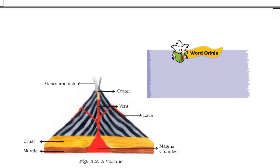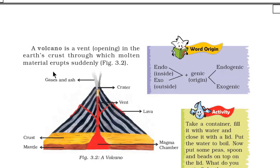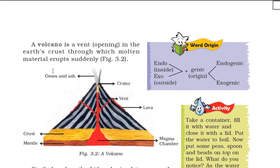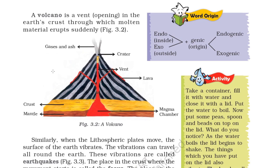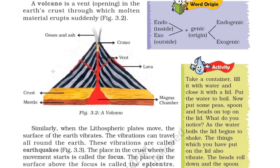A volcano is a vent or opening in the earth's crust through which molten matter erupts suddenly. In the diagram you can see vents in the volcano through which molten material erupts. Lava comes out through the vents, and gases and ashes emerge from the top. The original words: 'endo' means inside and 'exo' means outside, plus 'genic' meaning origin — giving us endogenic and exogenic.